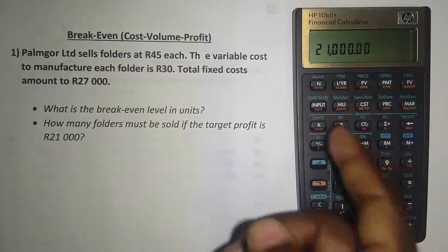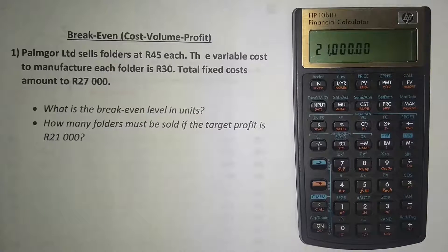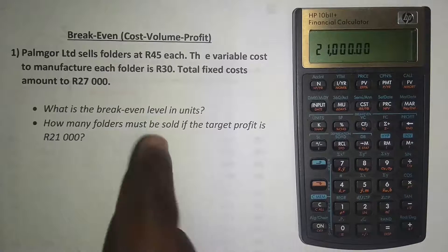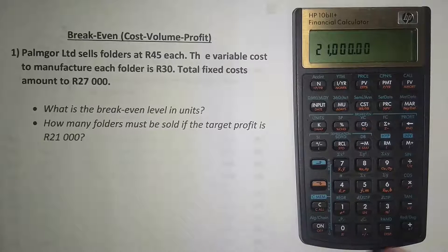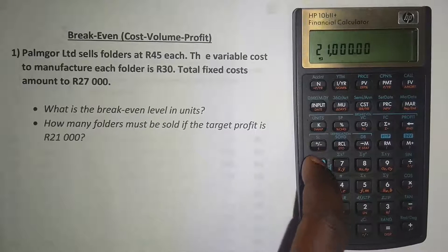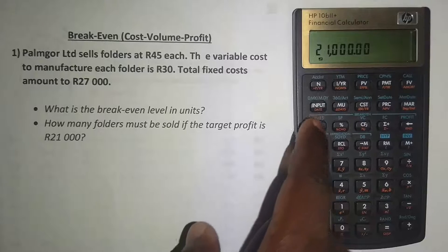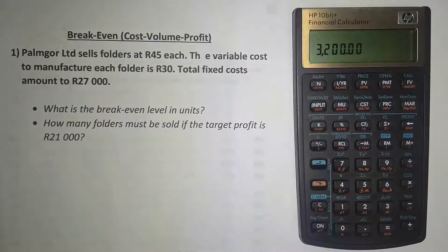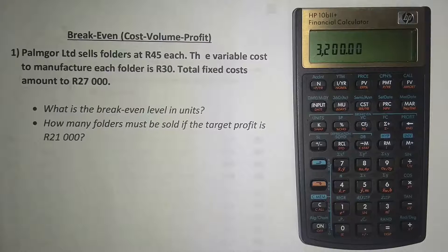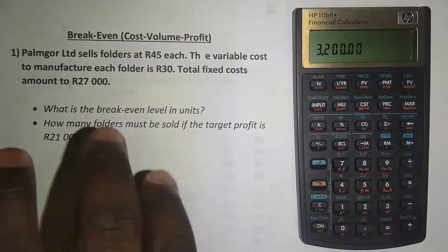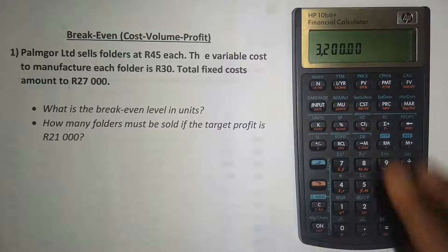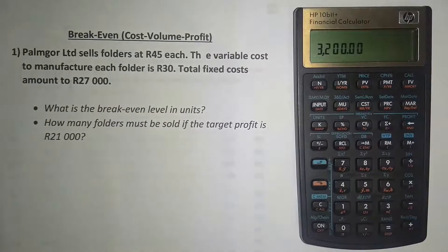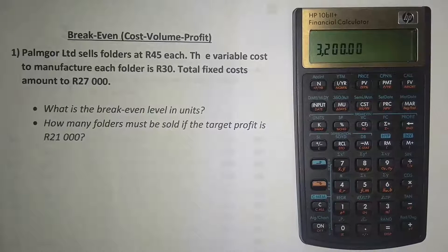All I need to do now is compute the units, because we're asked how many folders must be sold for a target profit of 21,000 Rand. So I press the blue button and then press that button for units. If I'm to make a profit of 21,000 Rand based on the information given, we need to sell 3,200 folders.